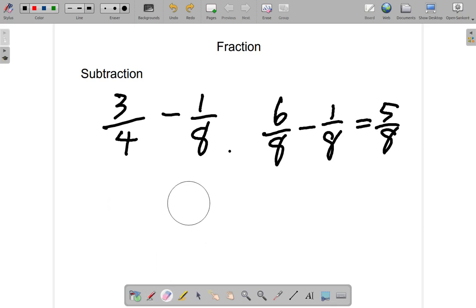Alternatively, you could use a shortcut and say you draw the line and find the LCM. LCM of 4 and 8 is 8. 4 into 8, 2 times 2, 3.